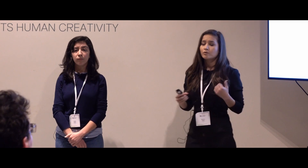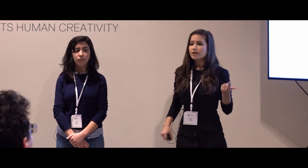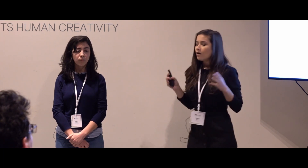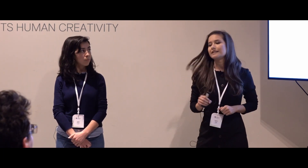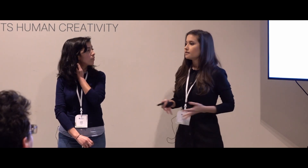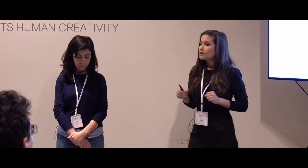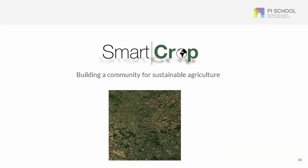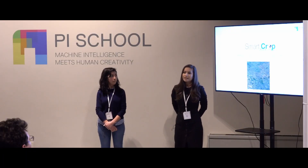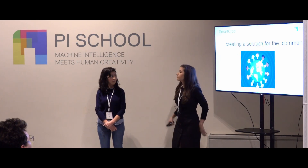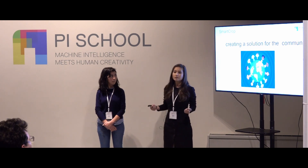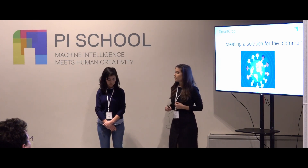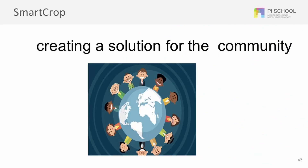Remember the three use cases presented at the beginning: targeting farmers, insurance companies, and the government. All three have a solution that uses satellite images and artificial intelligence. We plan to combine these use cases and our technology into one platform — SmartCrop — a platform not meant to solve the problem of one individual, but meant to bring together a community for sharing knowledge and using the power of technology to create a sustainable agricultural environment.